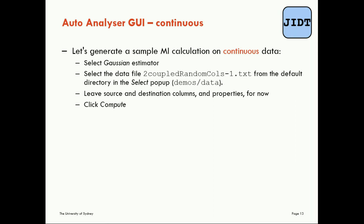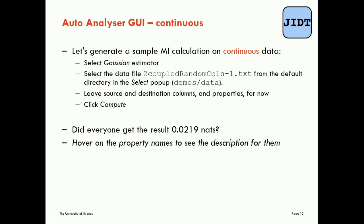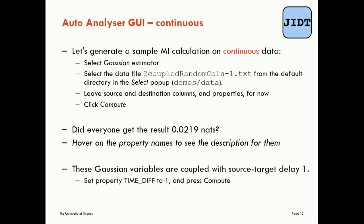So coming back to the slides we've clicked compute and got this result 0.0219 nats. Fantastic. I've already shown you hovering on the property name for the time difference and now we're suggesting the exercise to set a different time difference because this particular data set was generated for Gaussian variables coupled with a source target delay of one. So we're going to set the time difference to one and compute it again.